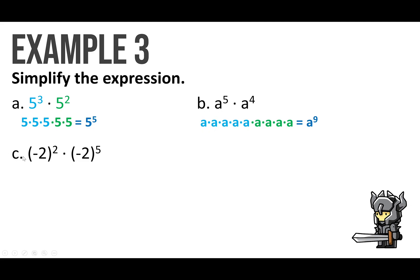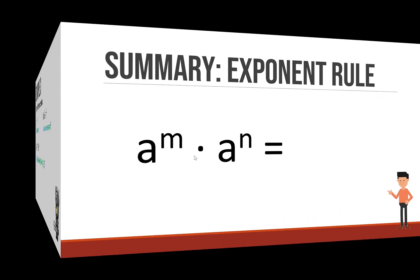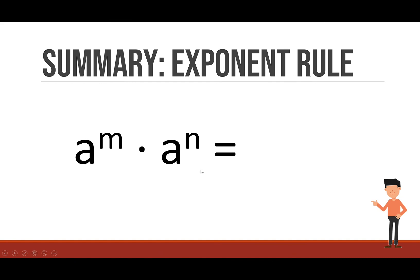For letter C, you have negative 2 to the 2nd power times negative 2 to the 5th power. We expand it out: negative 2 times negative 2, then negative 2 five times. All together, how many negative 2s are there multiplied? It's negative 2 to the 7th power — easy, just add the exponents. So to summarize: if you have the same bases and you're multiplying, just add the exponents — a to the m plus n power. Pretty easy stuff. See you guys in the next video.